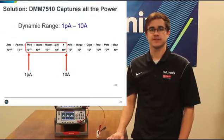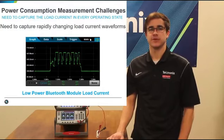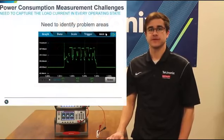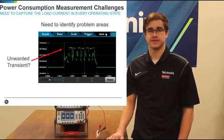Another challenge in capturing current characteristics of these devices is the speed that they change states, some only lasting tens of microseconds. We will need an instrument capable of capturing rapidly changing load current waveforms. Because the 7510 has a sample rate of up to a million samples per second, a very clear and detailed waveform can be found, exposing the current profile and allowing you to identify any power wasting problem areas such as unwanted transients.